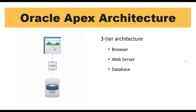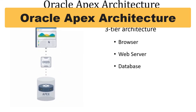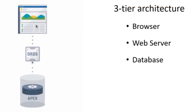As you can see on the left image, the first one is a browser, the middle one is the web server, and the third one is the database. So whenever you are submitting a page, the browser sends the request through the middle ORDS to the database, and then it traces back through the middle layer, and then to the browser again.